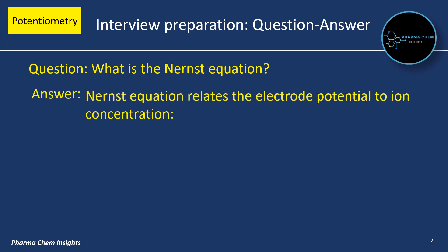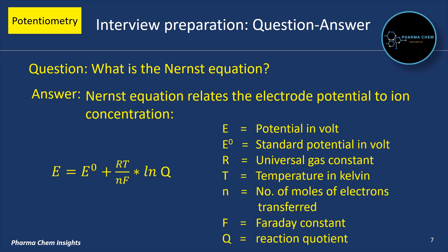What is the Nernst equation? The Nernst equation is the equation that relates the electrode potential to ion concentration. Its formula is: E = E0 + (RT / nF) × ln(Q), where E is the potential in volts, E0 is the standard potential in volts, R is the universal gas constant, T is temperature in Kelvin, n is the number of moles of electrons transferred, F is the Faraday constant, and Q is the reaction quotient.